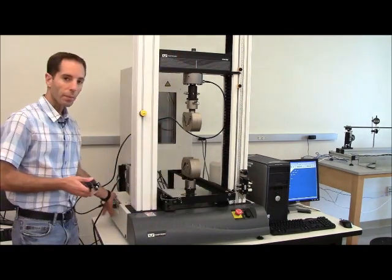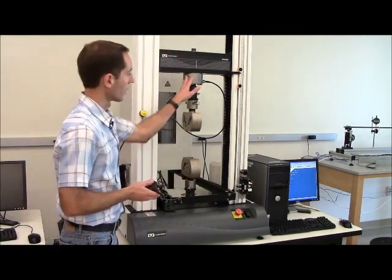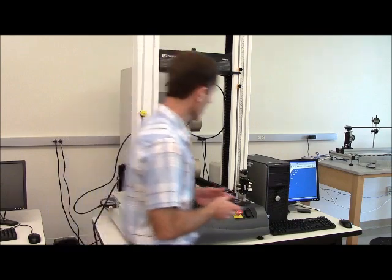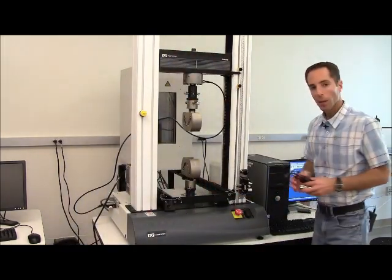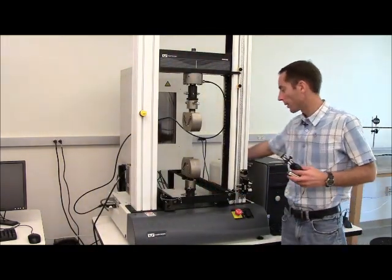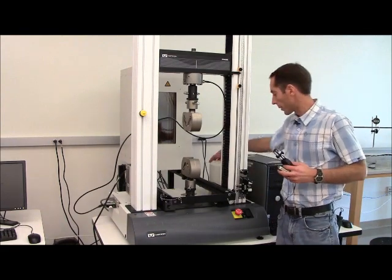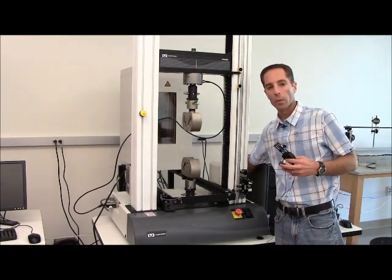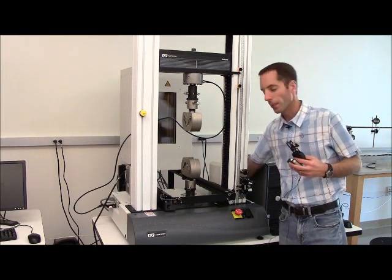Over on the side of the machine, we have our connections for our load cells, and if an extensometer is being used, that is done in this area over here. The power switch to the system is somewhat hidden. It's back behind this piece right here, next to the power cord that comes in. Look in that area and you'll find it.